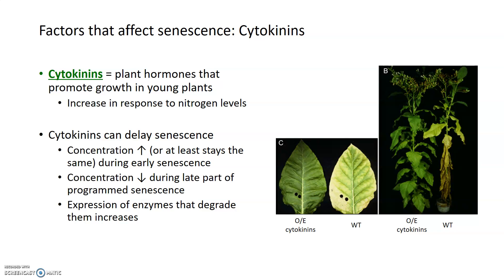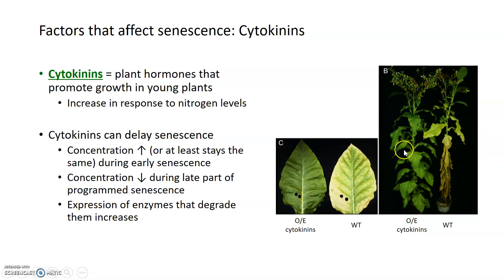There are plant hormones that can affect senescence in the opposite way. ABA and ethylene both promote senescence, but cytokinins — another group of plant hormones — actually delay senescence. Cytokinins are released in response to nitrogen levels, so more nitrogen means more cytokinins and generally more growth. If we look at these two tobacco plants — a wild-type on the right and a plant that overexpresses cytokinins on the left — they're basically the same age plants but look completely different, because the leaves are not undergoing senescence when there's overexpression of cytokinins.